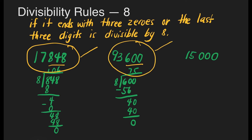How about the third number? 15,000. Automatically, this number is divisible by 8 because it ends with 3 zeros — we don't need to divide that. So we can say that 15,000 is divisible by 8.